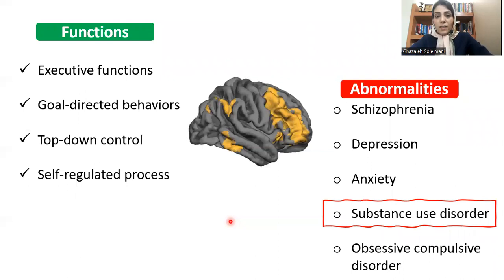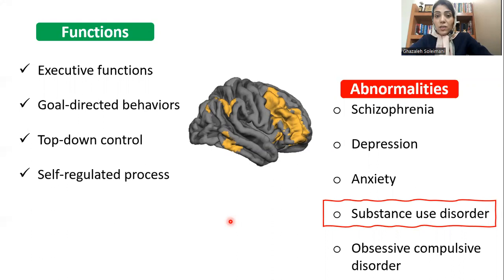Previous studies reported that people with substance use disorders, compared to healthy controls, showed reductions in frontal parietal connections in terms of structural and functional connectivity. We also know that key hub regions in the frontal parietal network in substance use disorder can be considered as biomarkers for treatment outcome predictions or monitoring. However, manipulation of the frontal parietal network using neuroscience-based technologies in substance use disorder has not yet been well explored.